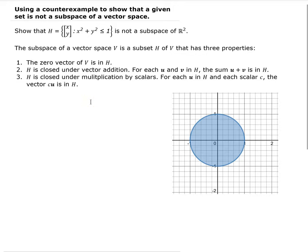So in this example, we want to use a counterexample to show that the set H that you see here is not a subspace of R2. The set H is basically all the points that lie in the unit circle, including the points on the boundary. And that's the image that you see down here, so X squared plus Y squared is less than or equal to 1.